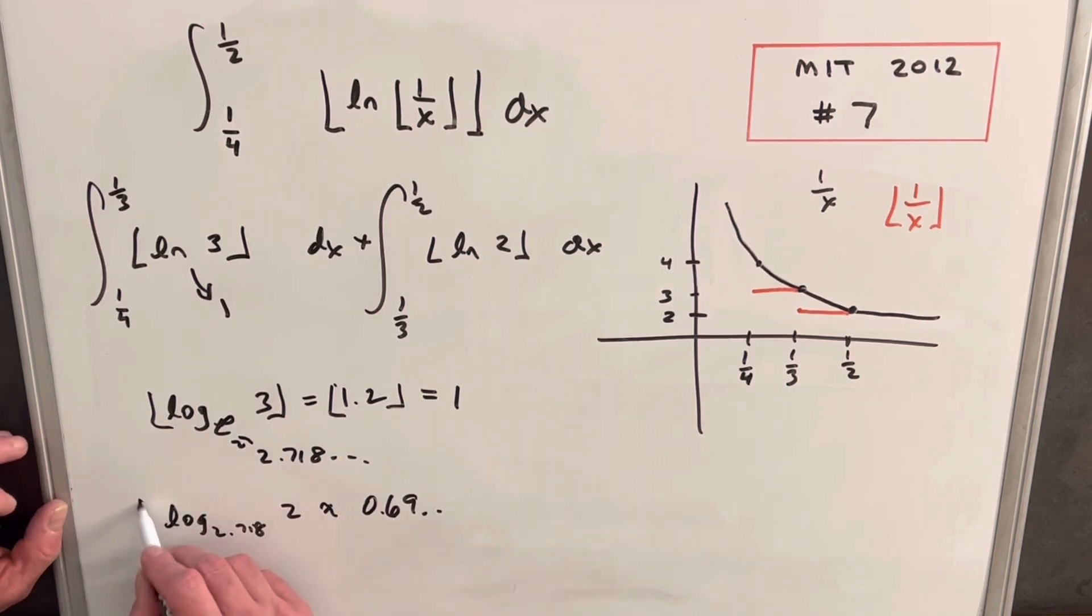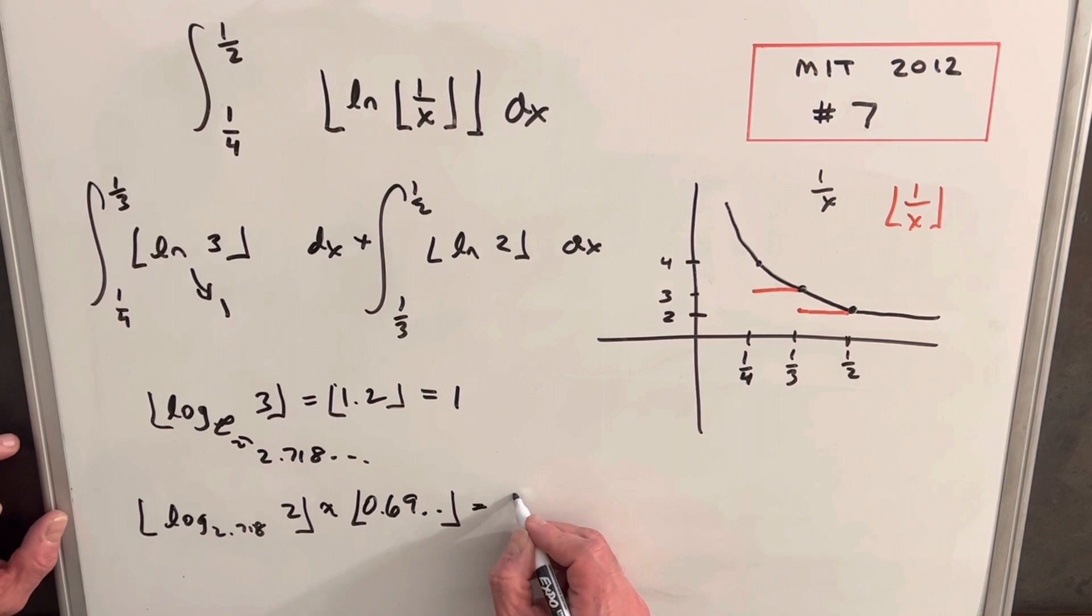Okay, but we have the floor around this. And so if we put the floor around 0.69, rounds down to the next lowest integer, the next greatest integer. And that's just going to be zero.